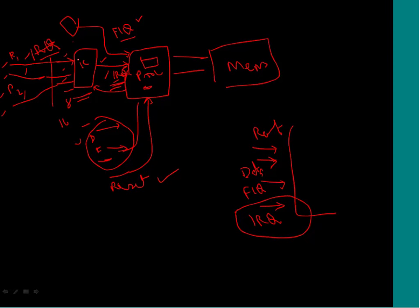You can selectively enable or mask some interrupts, give different priorities to them, and configure for level trigger or edge trigger — there are many things to configure in the interrupt controller. Peripherals such as a USB controller, serial controller, disk, and timers can all be connected to the interrupt controller, which prioritizes them and generates an interrupt to the processor.